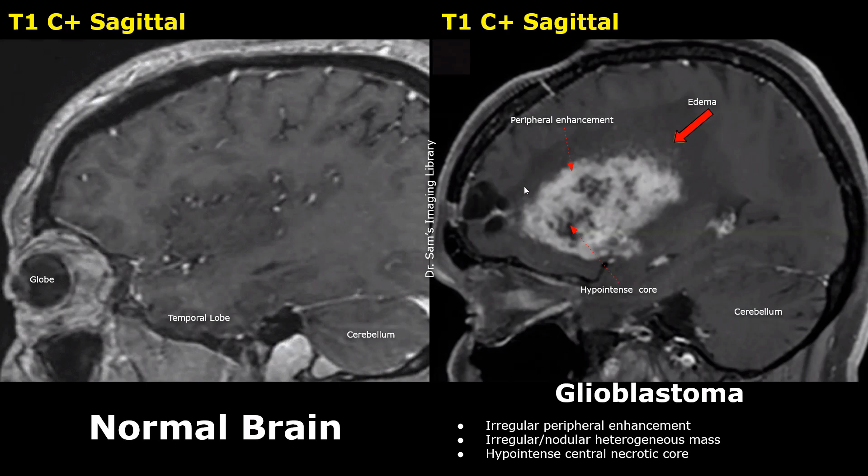T1 contrast-enhanced images are very helpful in the diagnosis of glioblastomas, but it becomes more accurate when multiple sequences are studied, especially T2 and FLAIR sequences. We will study them separately. Thank you so much for watching. Stay tuned for more imaging videos.